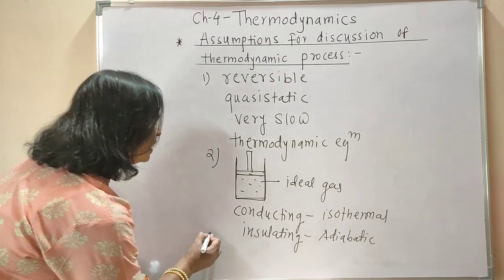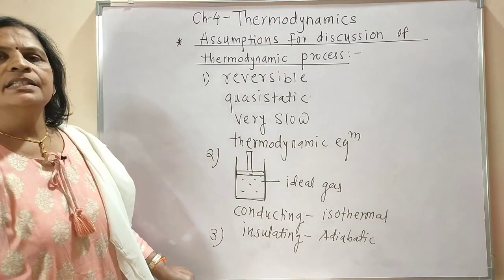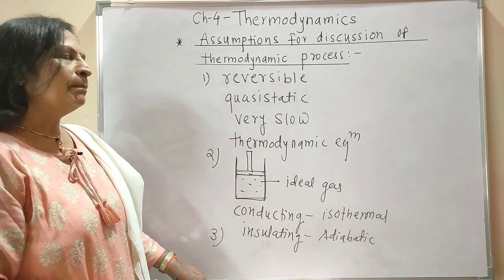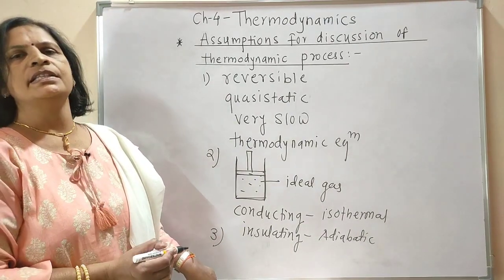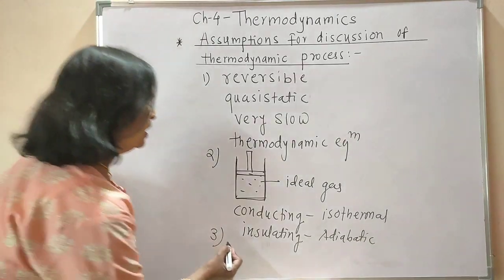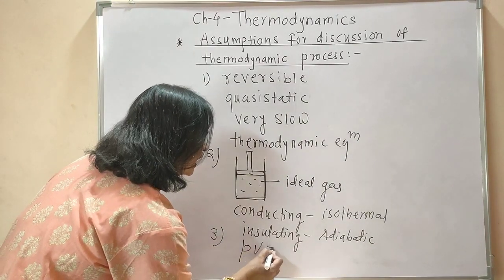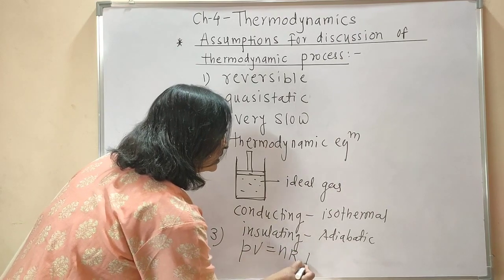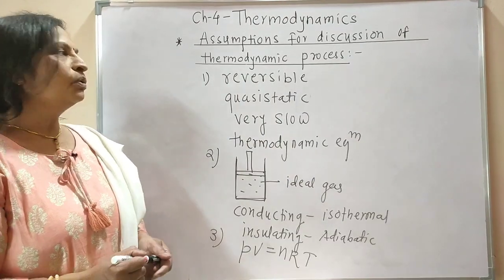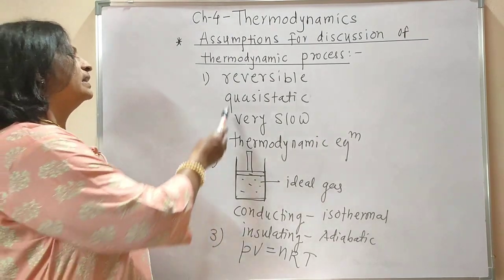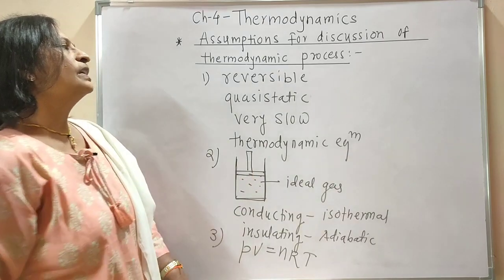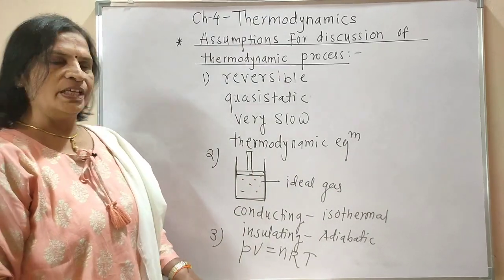The third assumption is that the ideal gas equation should be applicable to every system. The ideal gas equation means PV is equal to nRT. This ideal gas equation should be applicable to every system. These are the three assumptions for discussion of the thermodynamic process.